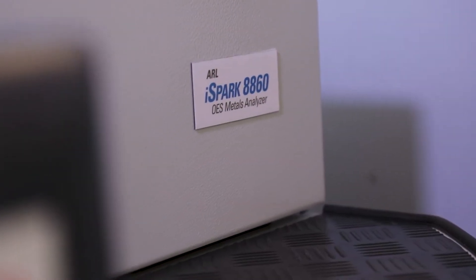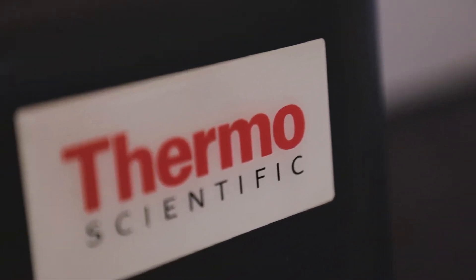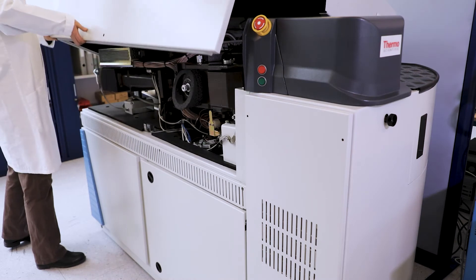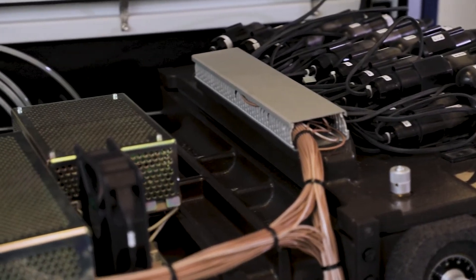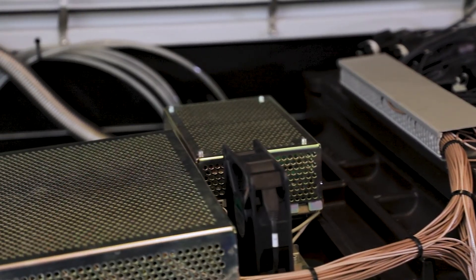The ARL iSpark is a high-performance OES spectrometer platform based on the best photomultiplier tube optics. It features a revolutionary digital spark generator and advanced signal acquisition and processing algorithms for the most advanced OES analysis.